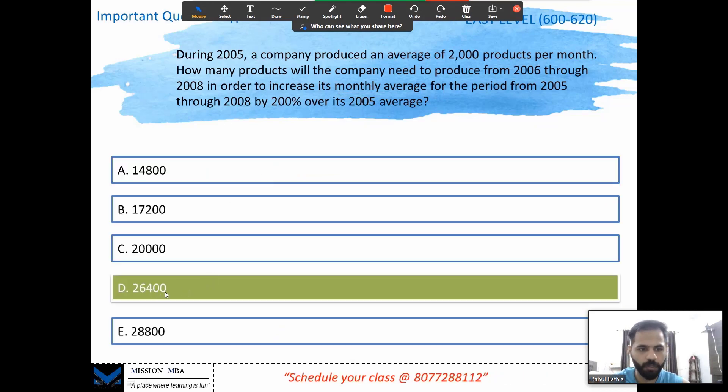Yes, it's 264k. Alright, let's have a look at this question. Please read it thoroughly. Try it on your own before you go ahead with the solution. John makes a contribution to a charity fund at school. The average contribution size will increase by 50%, and we also know that it reached 75 dollars after increasing. And we are given that if there were five other contributions apart from John, then what is the size of John's donation? Alright, again we are given a few things. Out of the total, we are going to draw the table.